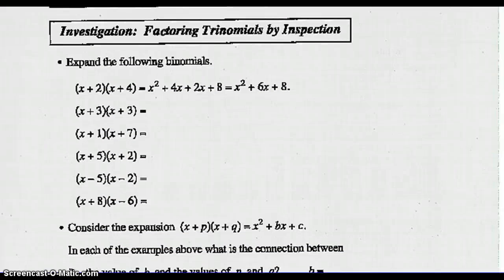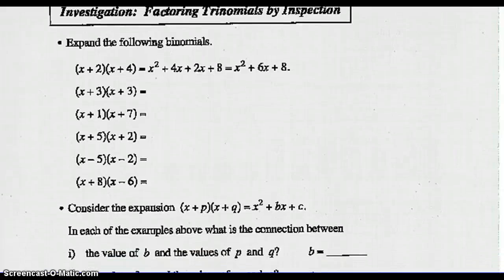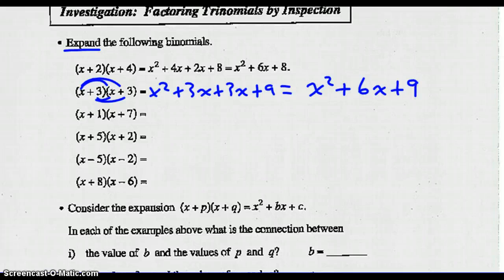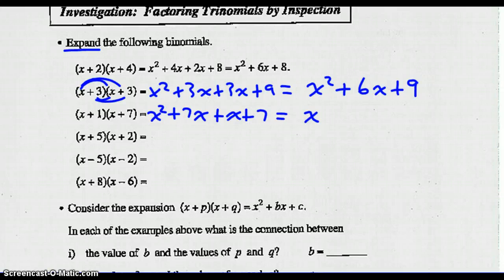Let's look at factoring trinomials by inspection. In order to factor, we have to remember how to expand. Each term in the first binomial gets multiplied by each term in the second one. x times x, x times 3, 3 times x, and 3 times 3. Combine like terms — those middle terms are like: 3x plus 3x is 6x. Do the same thing for the next one: x times x, x times 7, x times 1, and 1 times 7. Combine the middle terms: 7x plus 1x is 8x.